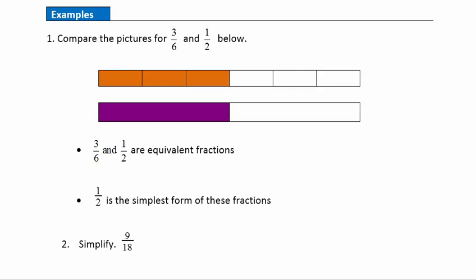Example 1: compare the pictures of 3/6 and 1/2. Here we have 3/6 — 3 shaded out of 6 boxes in total. And here we have the fraction 1/2 — 1 box shaded out of 2 boxes total. You can see that 3/6 and 1/2 are the same amount, so these are equivalent fractions. 1/2 is the simplest form because that's the simplest way to describe this amount.